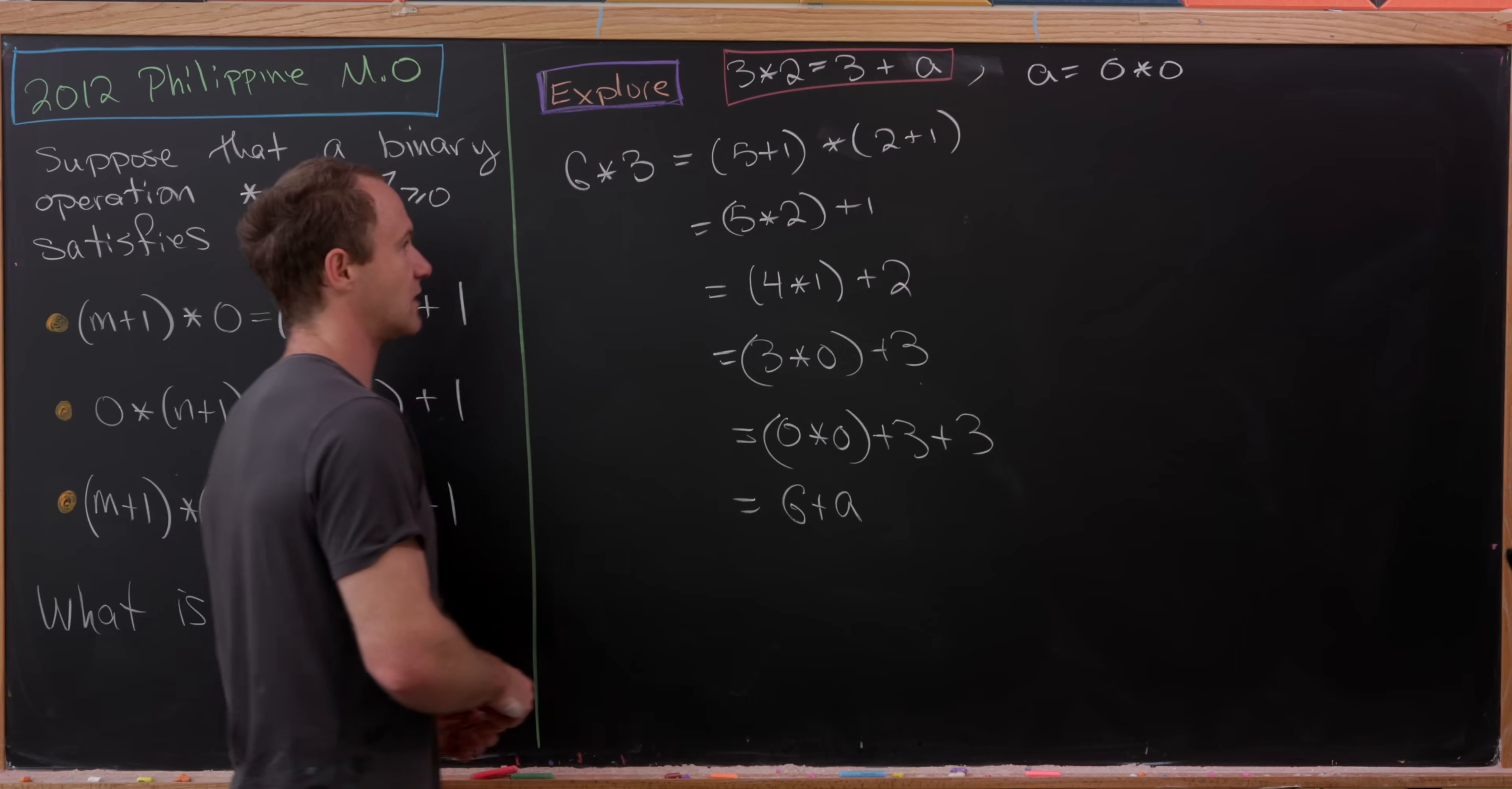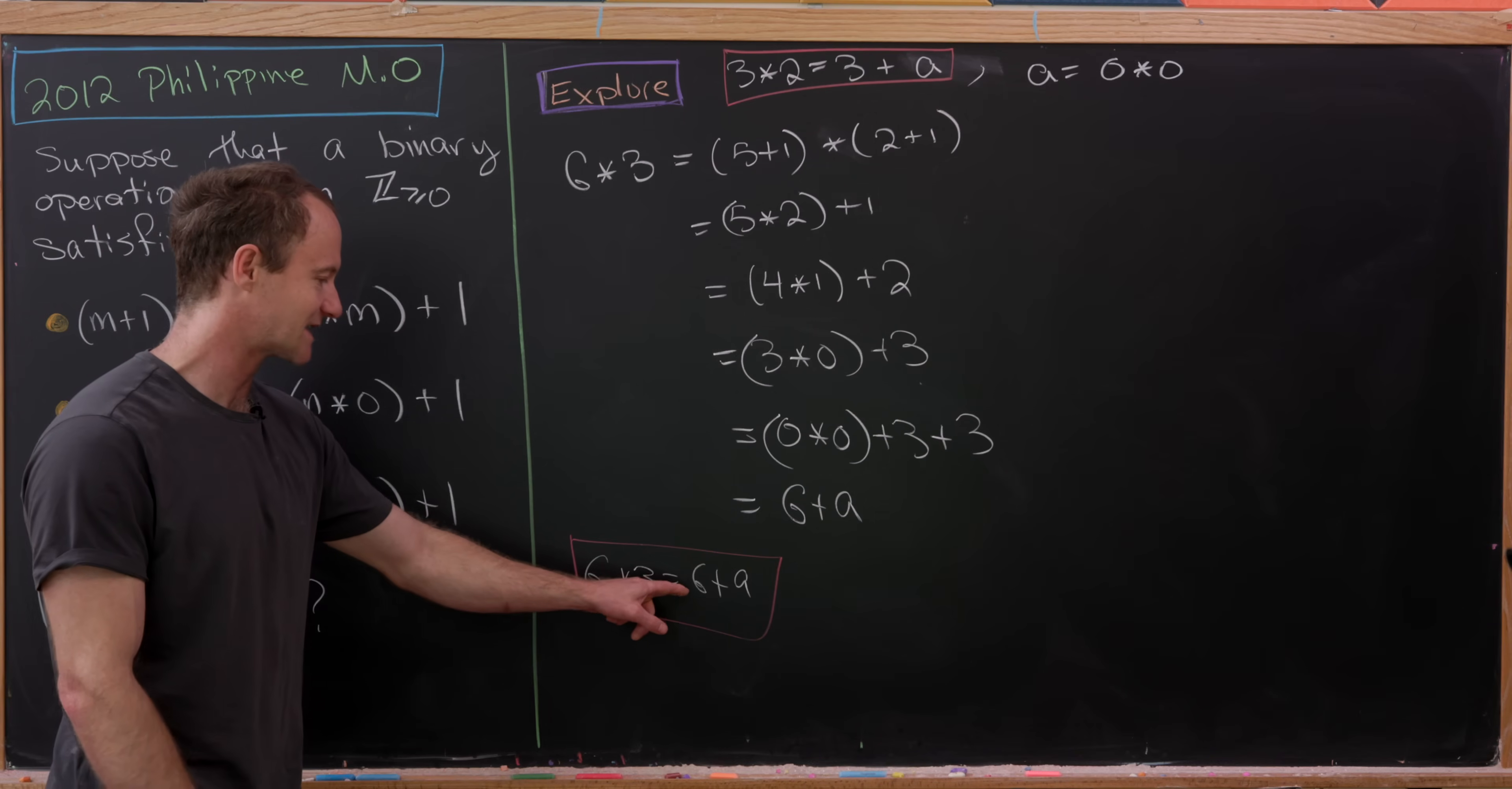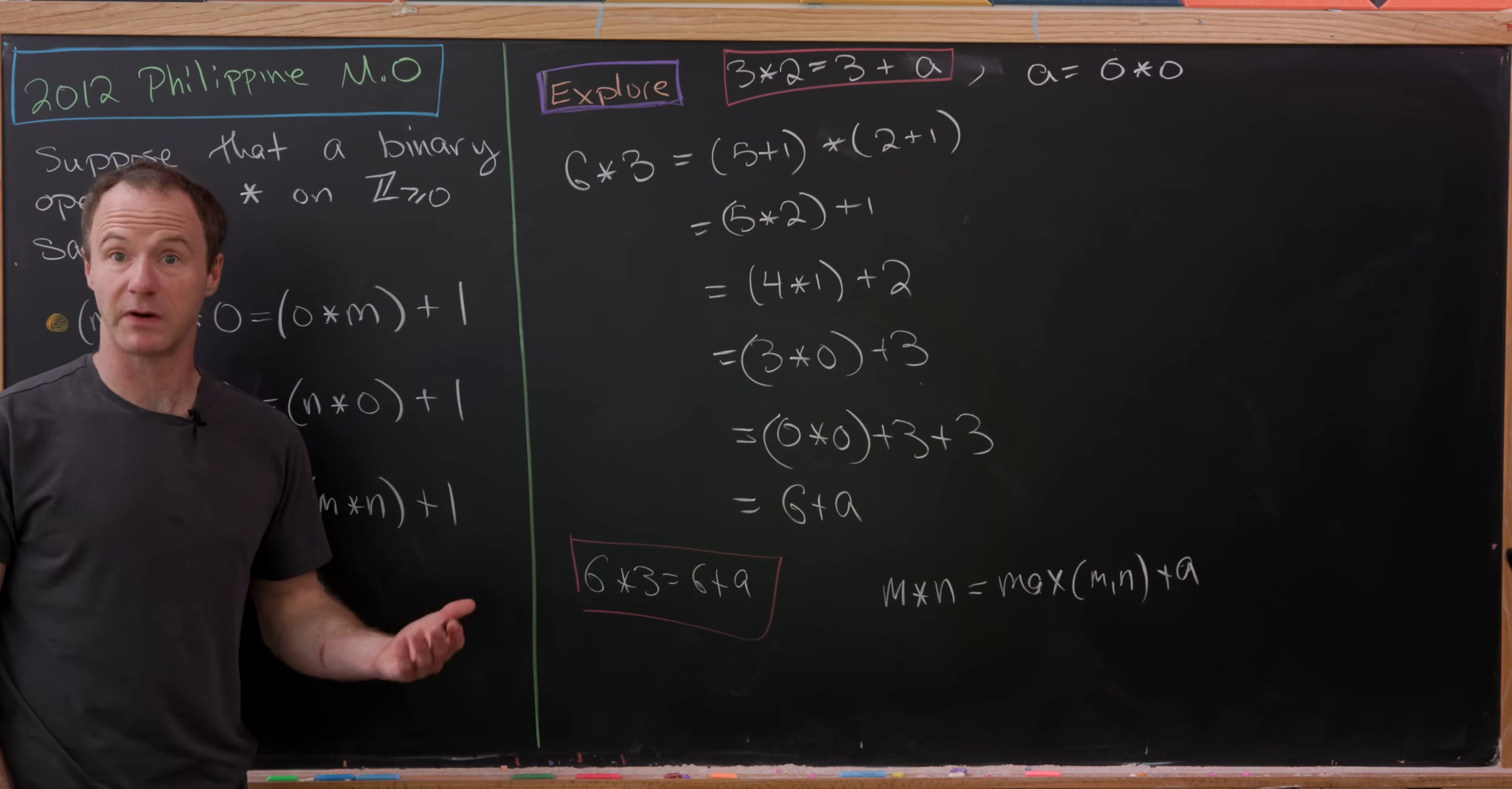Now let's collect that. We know that 6 star 3 equals 6 + a. Some sort of pattern is starting to arise. We have 3 star 2 is 3 + a, and 6 star 3 is 6 + a. It seems like this star operation is pulling out the maximum value. Here it pulled out the maximum value of 6, and here it pulled out the maximum value of 3. I think a nice guess would be that m star n equals the maximum of m and n plus a, where a equals 0 star 0.